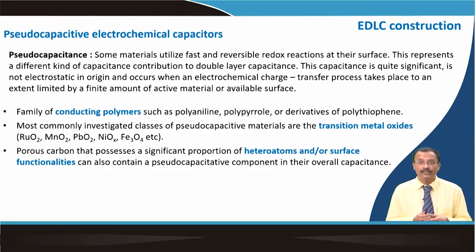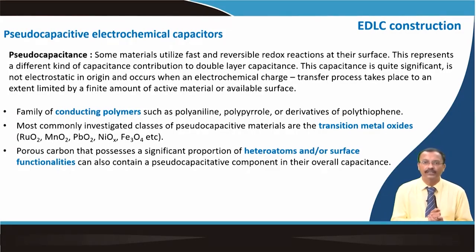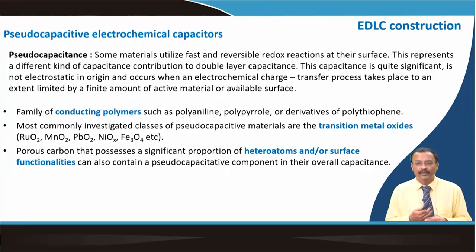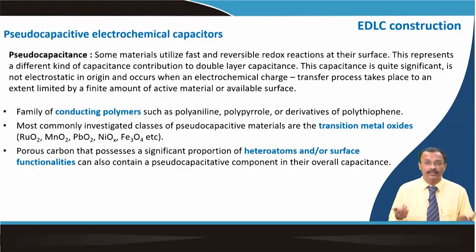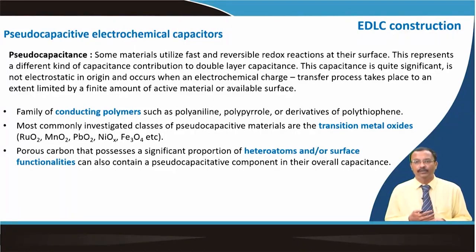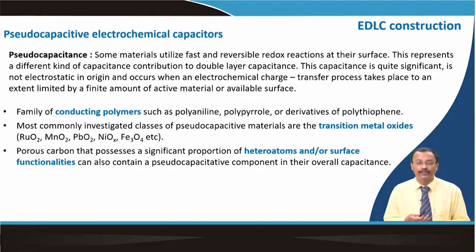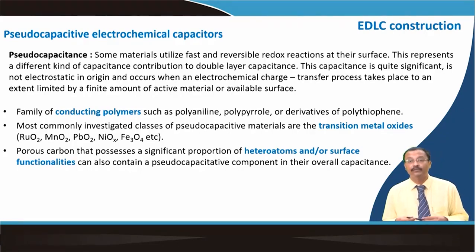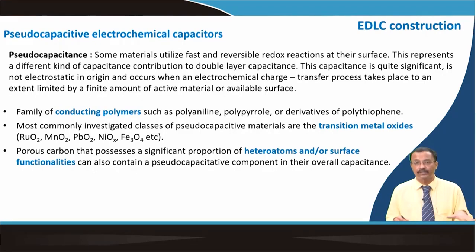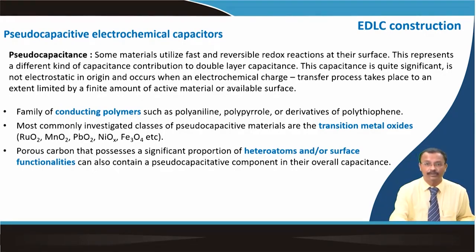Pseudocapacitance arises from materials utilizing fast and reversible redox reactions — not only surface adsorption but actual redox reactions at the surface. Three types of pseudocapacitors are identified: conducting polymers (polyaniline, polypyrrole, polythiophene derivatives), transition metal oxides like ruthenium oxide, and porous carbon possessing significant amounts of heteroatoms with changed surface functionality, increasing the pseudocapacitive component.